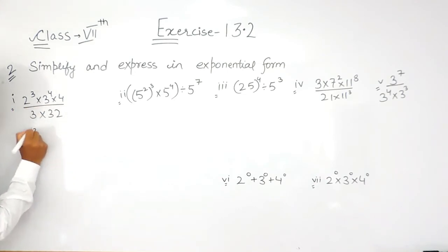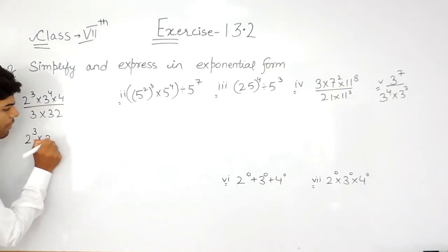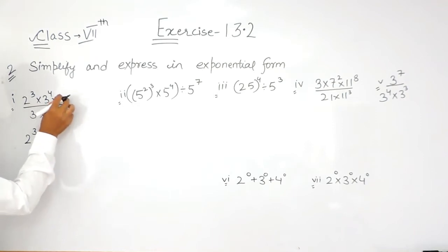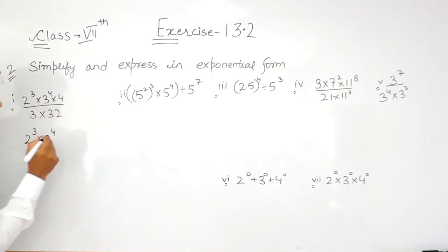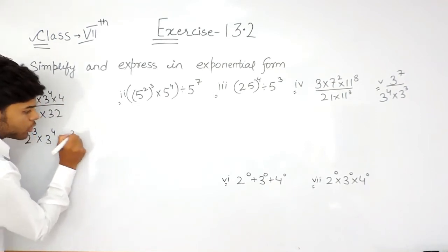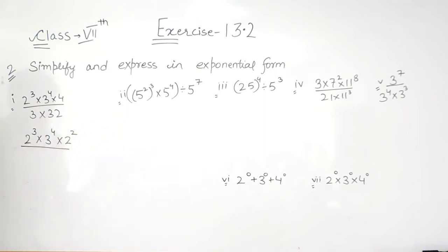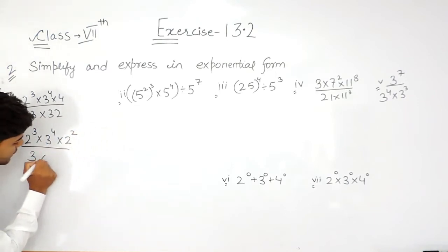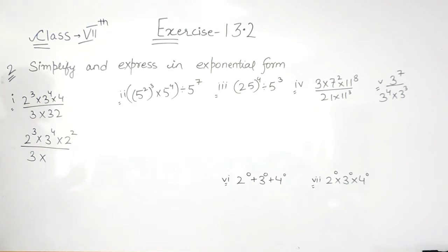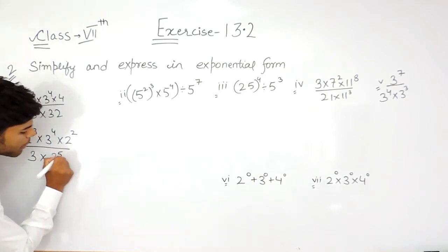So, 2 to the power 3 can be written as it is, 3 to the power 4 can be written as it is. But 4 can be written as 2 to the power 2 because we will be writing them in their prime factorization form. Then 3 will be as it is, then we will do the prime factors of 32 — which is 2 to the power 5.